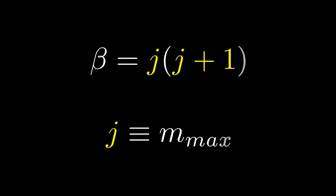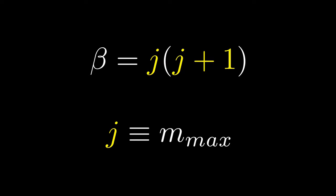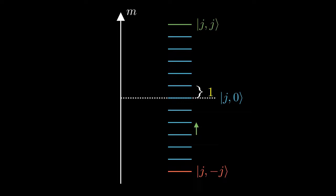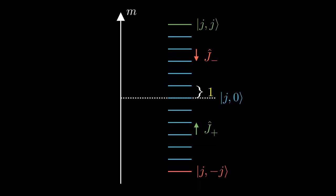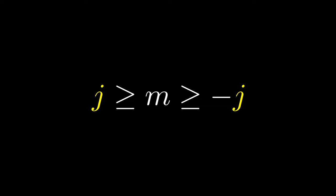Therefore, the ladder must have a top rung and a bottom rung. Through some algebra, we could show that the ladder is symmetric in a sense that the maximum m is the negative minimum m. In addition, we can show that β = j(j+1), where j is the maximum m. We will also relabel our eigenstates from |β,m⟩ to |j,m⟩ as we can directly deduce the eigenvalue of J² from the j label. We have now completely extracted the spectrum of angular momentum along one axis in quantum mechanics. j can only be integers or half integers because the raising operator must be able to raise the angular momentum projection from -j to j in integer number of applications. And m is between j and -j because j is maximum m by definition.